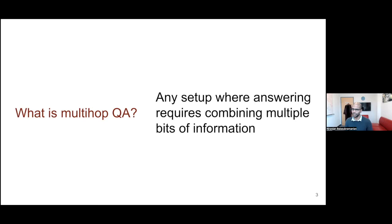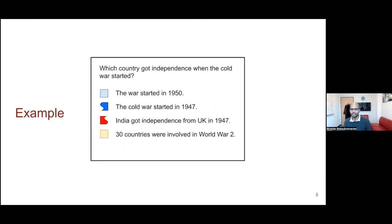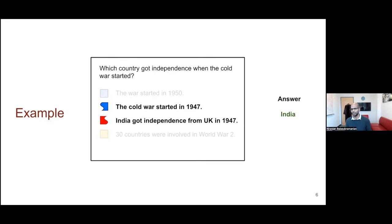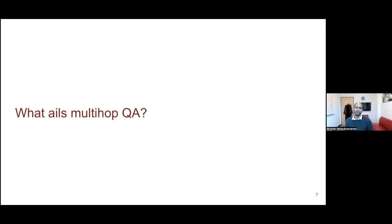When I say multi-hop QA, what do I mean by this? I mean any question-answering setup where you actually have to combine different pieces of information that potentially come from different places in text or different sources. So that's my operational definition. Some may say you should call it multi-step — there is not necessarily a sequential way to answer things. But for the purpose of this talk, let's say multi-hop QA is where you need to combine different pieces of information. Here's an example: which country got independence when the Cold War started? Cold War started in 1947, and India got independence from the UK in 1947. From this, you're able to synthesize and figure out the answer is India.